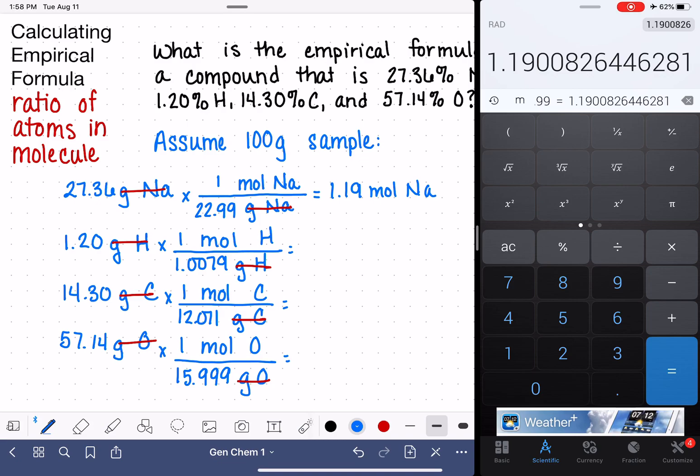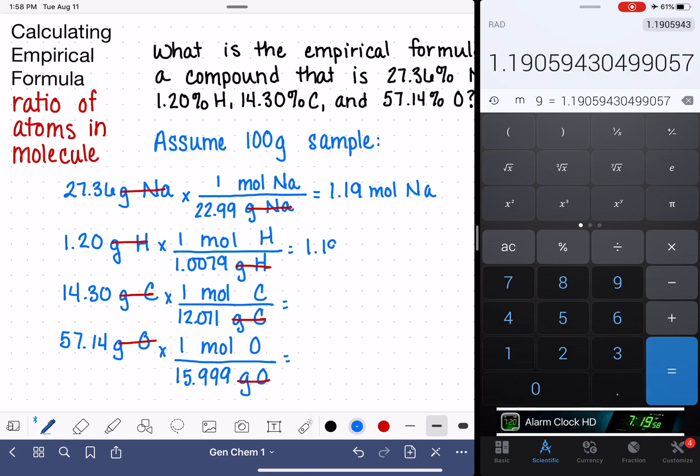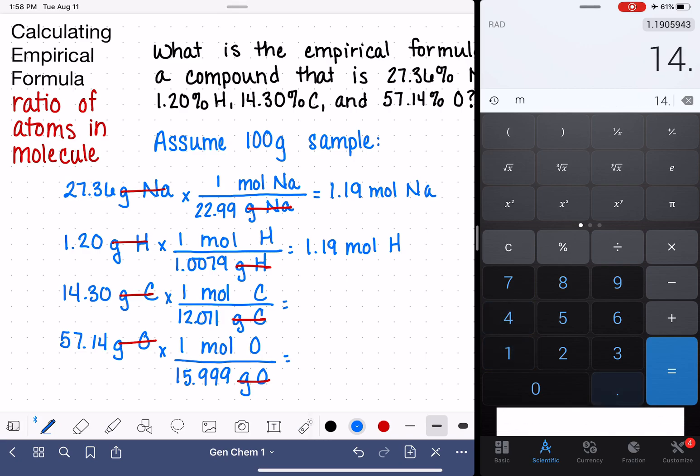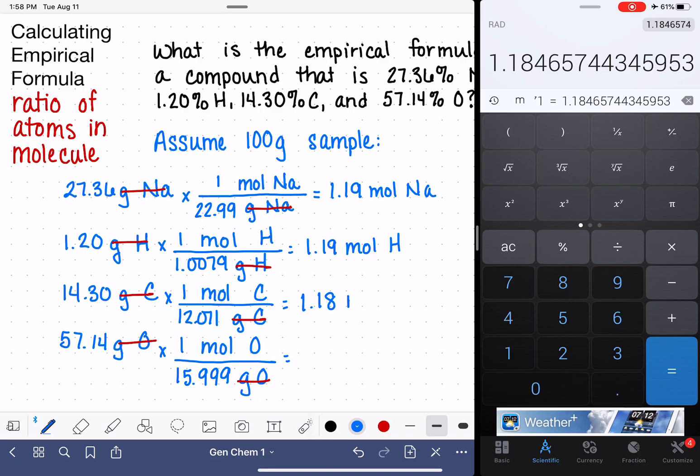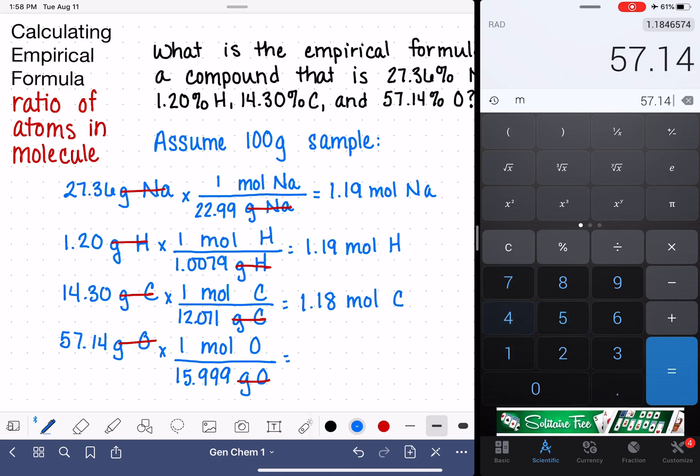For hydrogen, 1.2 grams divided by 1.0079. That is 1.19 moles of hydrogen. Don't be weirded out when a lot of these or some of these end up being the exact same number. That's not unusual. 14.30 divided by 12.011. 1.18. That's pretty close to the same number.